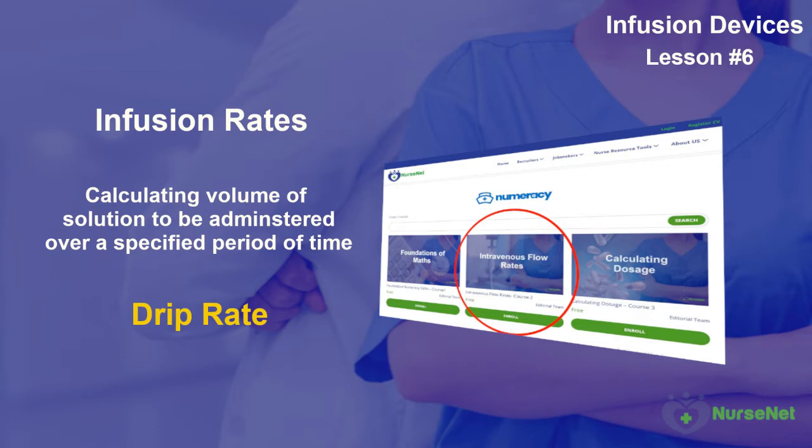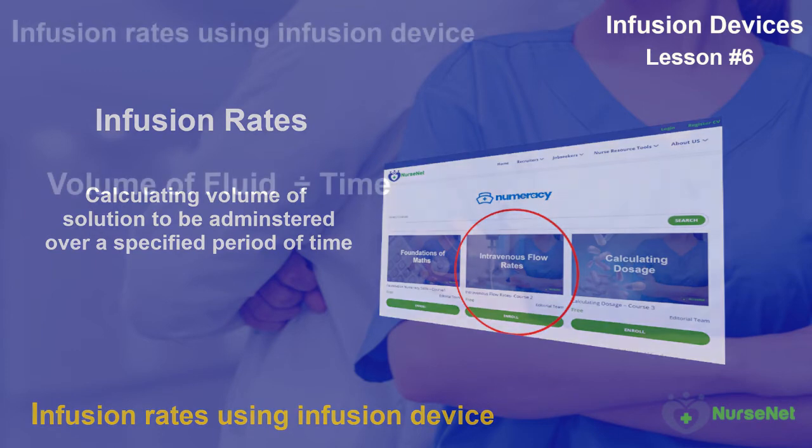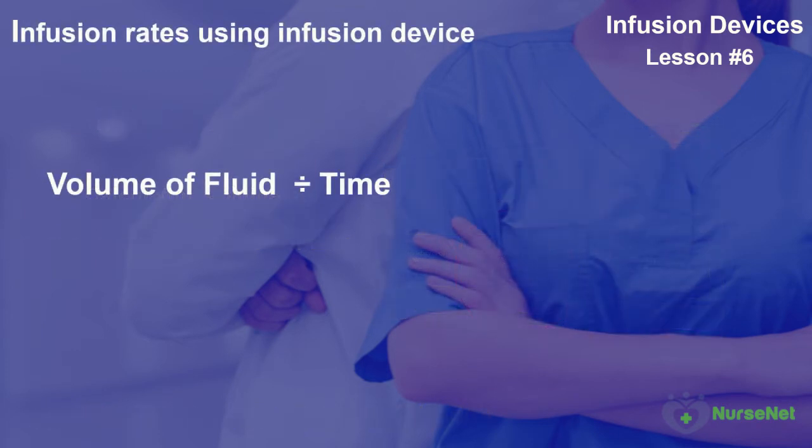In other words, we're going to calculate infusion rates using an infusion device. The formula we will need for this calculation is volume of fluid divided by time.